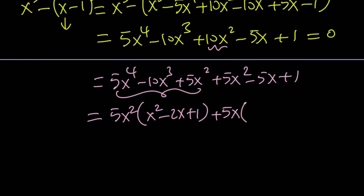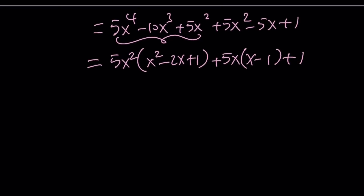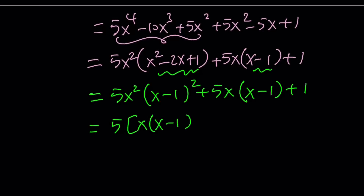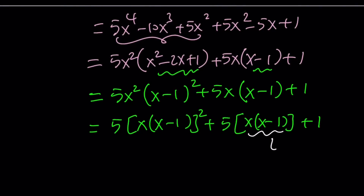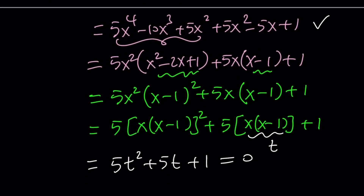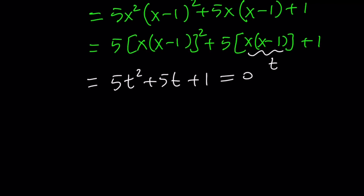This gives us five x squared times x minus one squared, plus five x times x minus one, plus one. Notice that x times x minus one repeats, so we can use the substitution t equals x times x minus one. The expression becomes five t squared plus five t plus one equals zero. This is much easier — we transformed a quartic into a quadratic. The t values are t equals negative five plus or minus the square root of five, all over ten.